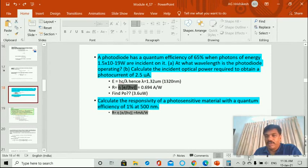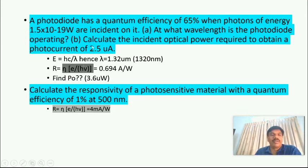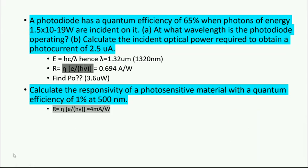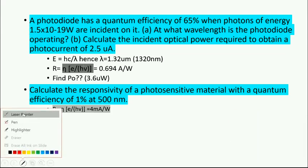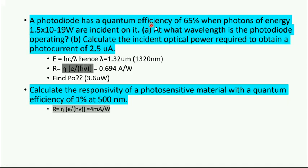Hi students, we will continue with another problem set regarding photodiode. I will share a slide. The question is: a photodiode has a quantum efficiency of 65% when photons of energy 1.5×10⁻¹⁹W are incident on it. At what wavelength is the photodiode operating?